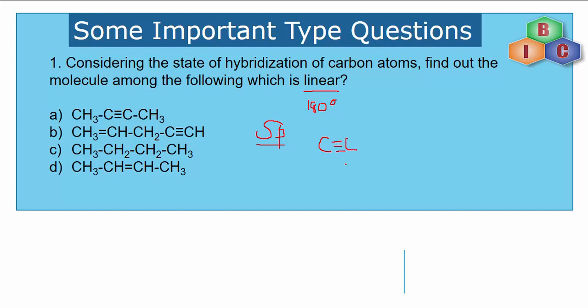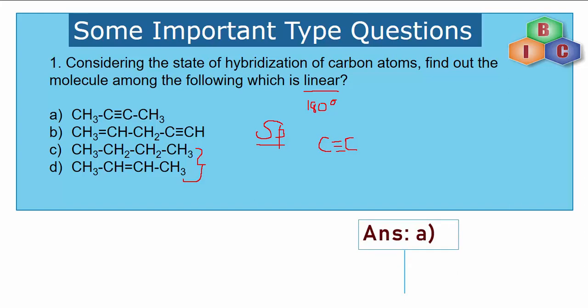For sp hybridization, carbon atoms should be involved in a triple bond. On that basis, we can remove the options that have only single bonds or double bonds — no triple bond. That eliminates two options, leaving us with option A and option B. Among these, the answer is option A.